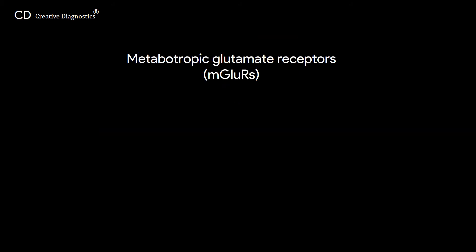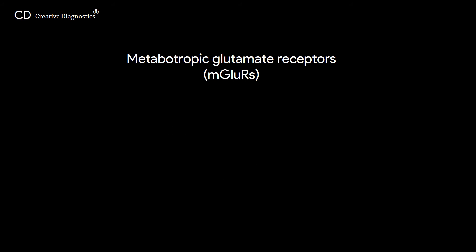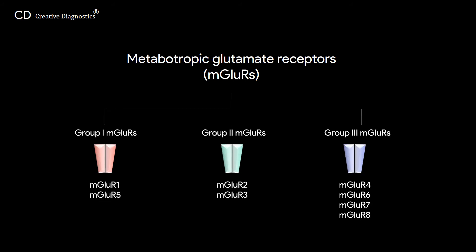Metabotropic glutamate receptors are assembled as dimers, with 8 mGluR subtypes — mGluR1 to 8 — that are differentially expressed in specific neuronal populations in the CNS. They are divided into 3 subgroups based on sequence homology, G-protein coupling, and ligand selectivity.